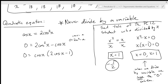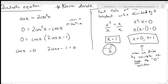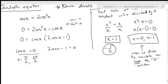For cosine x equals zero, there are two places between zero and two pi where that happens: x equals pi over two and three pi over two. Those are my conditional solutions. We always find the conditional solutions between zero and two pi first, so we can then add and find the rest of our general solutions.